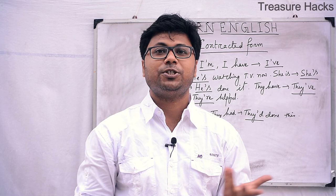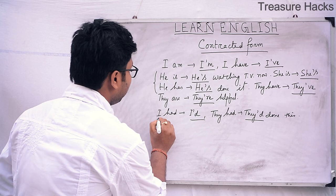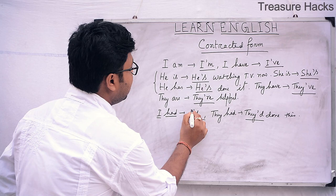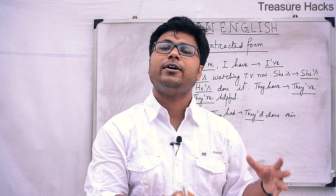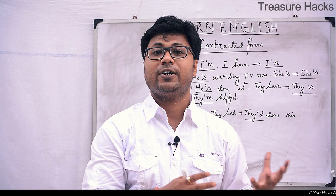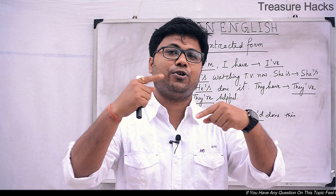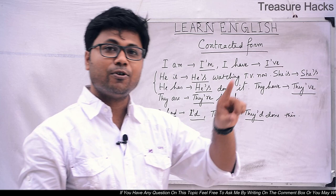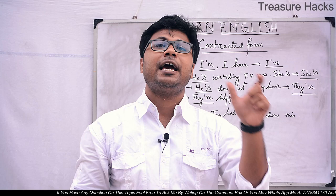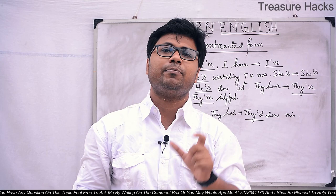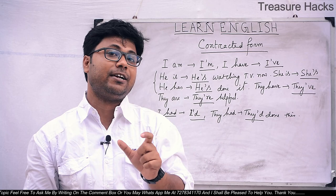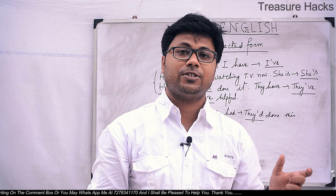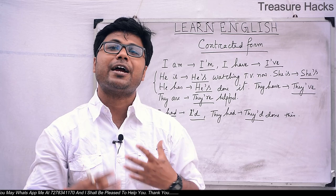Now for subject or pronoun-based contractions with 'had': any pronoun combined with 'had' contracts using apostrophe D. For example: 'I had watched this movie' becomes 'I'd watched this movie'. Similarly: 'I'd done it', 'I'd seen this movie'. When 'had' is used with any pronoun, the contracted form uses apostrophe D — for example, 'they had done it' becomes 'they'd done it'.